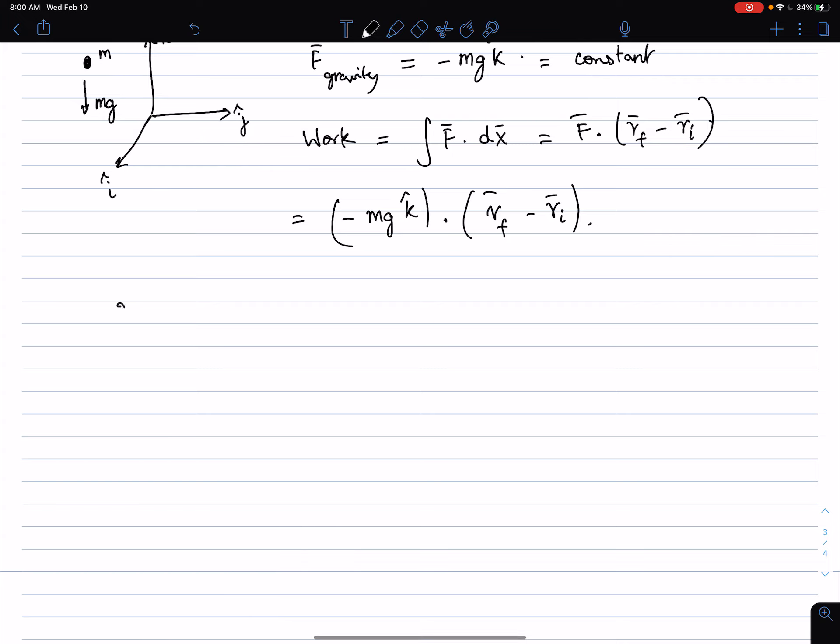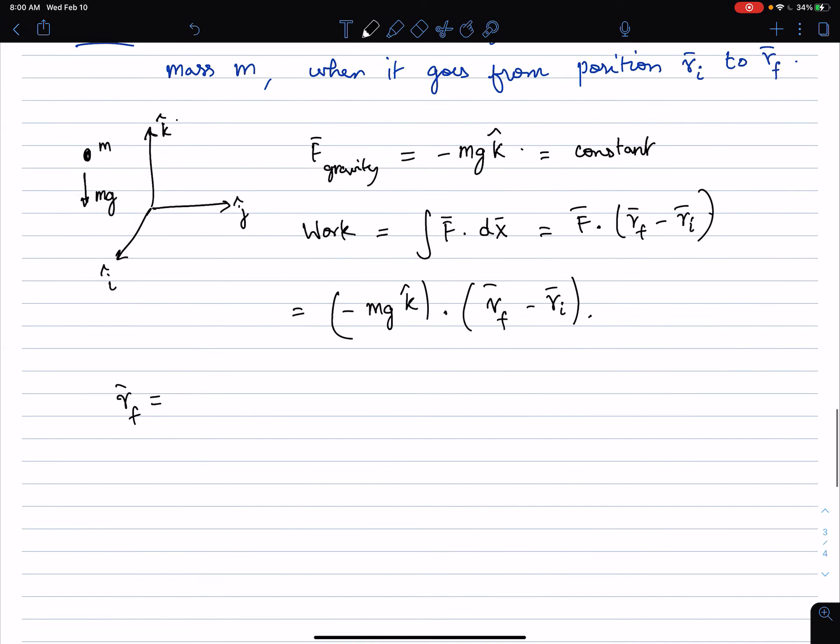Now let's say the final position is, like basically the mass, it's moving in some manner, right? So it's moving along this path, and its initial position is x_i, y_i, z_i, and the final position is x_f, y_f, z_f.